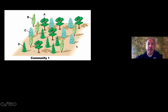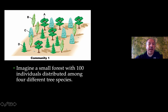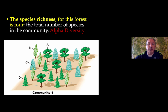As you can see in this forest, let's say there are a hundred trees and we're counting up the number of different species. You can see there's A, B, C, and D representing different species in this particular forest. This is a measure of alpha diversity — species richness, the number of different species found in a particular community. In this community, there are four different ones, so alpha diversity is four.